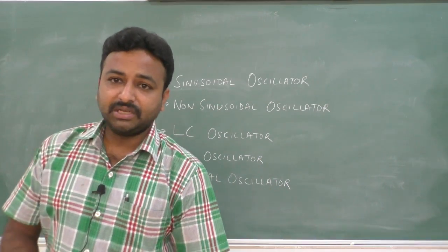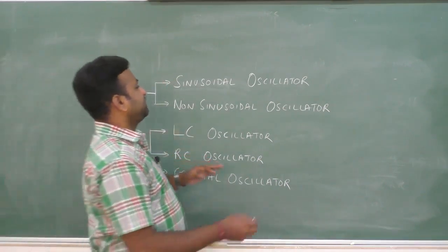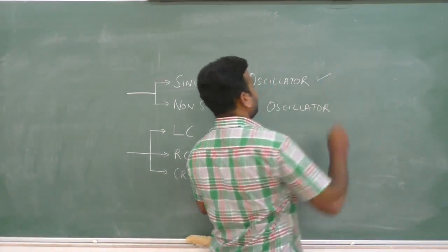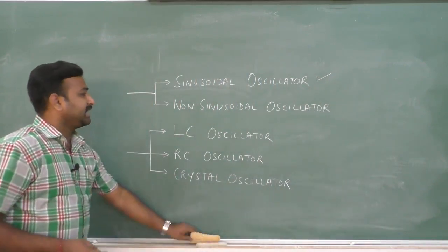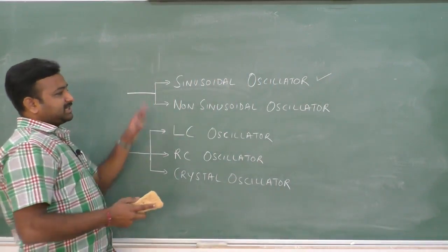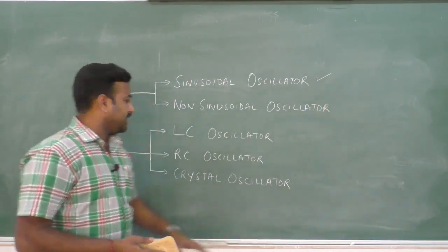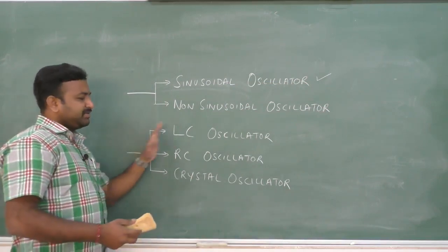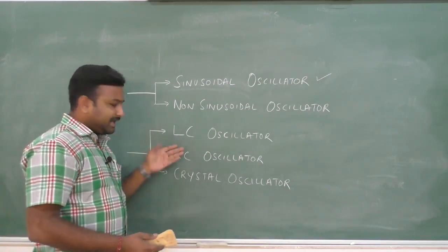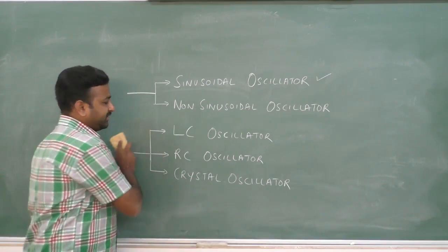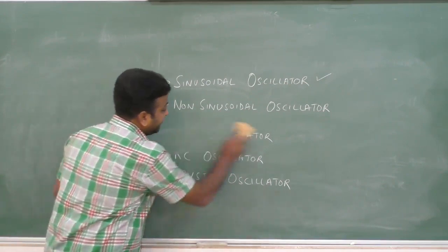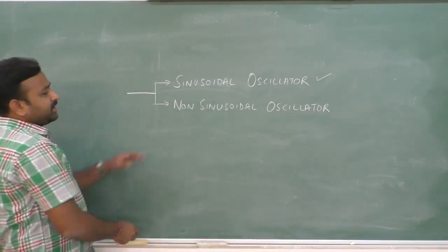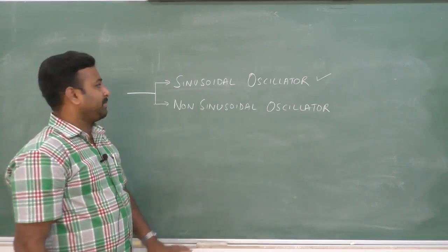In this session, let us start our discussion with sinusoidal oscillators. We will discuss only these two types - sinusoidal and non-sinusoidal - in this session. In upcoming sessions, we will study LC oscillators, RC oscillators, and crystal oscillators in detail. Let us restrict ourselves to these two concepts for now.